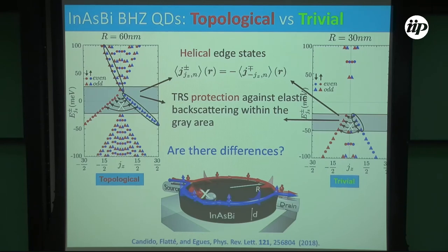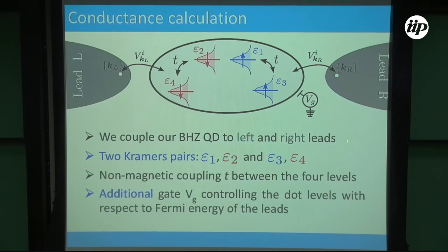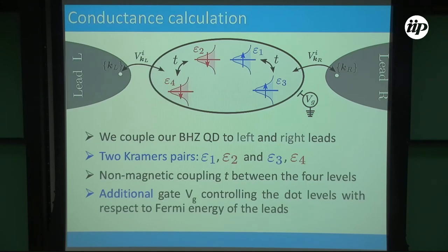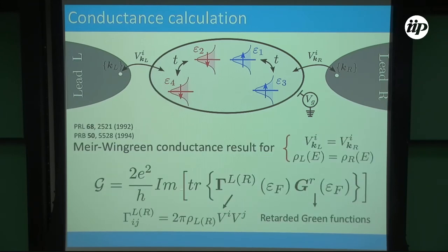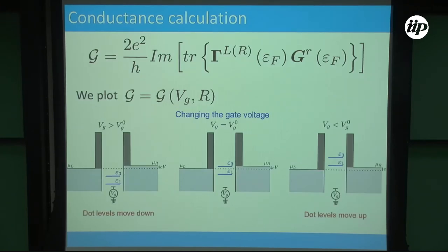Side by side, you can compare the topological and non-topological cases — they have sort of the same features within this gray area. The difference is that one happens within the gap and the other does not. You can still ask: is there something I could calculate to differentiate these two systems? We went on and did further conductance calculations, singling out four states. We think of coupling the dots to two leads and use non-equilibrium Green's functions — though we're doing linear response — to calculate the conductance. We vary the conductance by applying a gate to move these levels up and down. I can also change the dot radius, which essentially splits the levels further because of confinement.